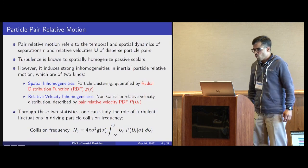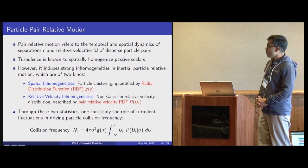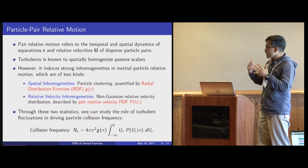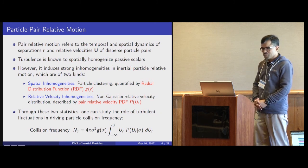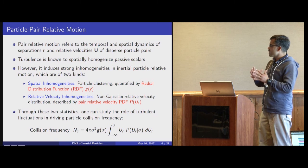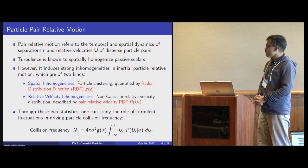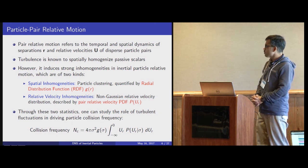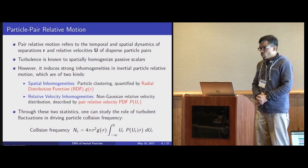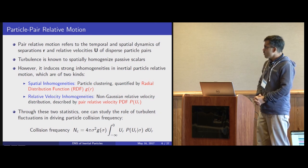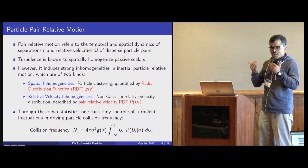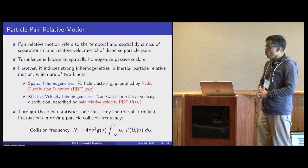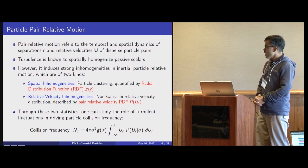Let me talk briefly about what I mean by particle pair relative motion. When we say we want to understand particle pair relative motion, we mean we want to understand the temporal and spatial dynamics of the separations R and the relative velocity U of dispersed particle pairs. The role of turbulence is rather important because generally speaking, if you have inertia-less passive scalars, turbulence is known to spatially homogenize the passive scalar distribution.